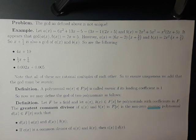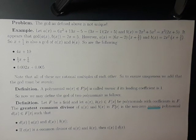One saving grace is that all of these polynomials are rational multiples of each other. So to ensure uniqueness, what we'll do is add the requirement that the GCD must be monic. A polynomial m of x with coefficients in f is called monic if its leading coefficient is 1, and here we mean the multiplicative identity element in the field f.